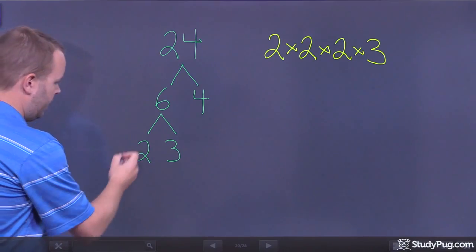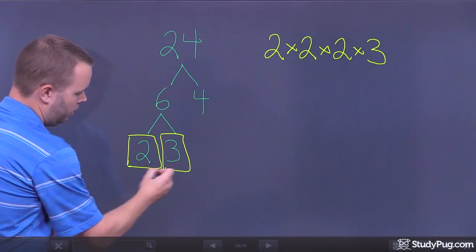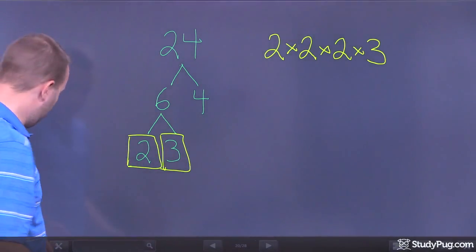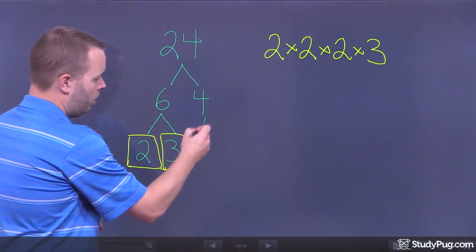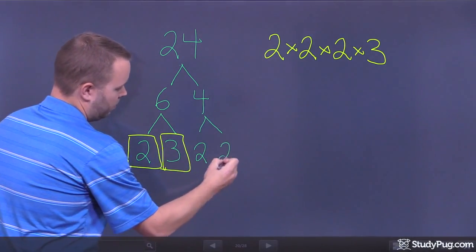6 can be broken down into 2 times 3. Notice, this here, end of a branch, end of a branch. Those are both primes. I go over to 4. 4 is 2 times 2.